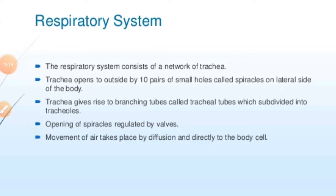Next we talk about the respiratory system. It comprises a network of blind-ending white tubes called trachea. The trachea are connected to the outside through 10 pairs of lateral apertures called spiracles — two pairs in the thorax and eight pairs in the abdomen. During rest, some spiracles are open so that oxygen can diffuse continuously into the body.